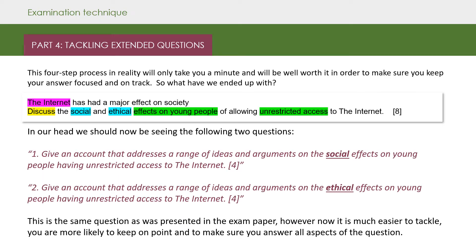This has now become two slightly less daunting four mark questions instead of one eight mark question. This four step process in reality will only take you about a minute and it's well worth it in order to make sure you keep your answer focused and on track. So in our head, we should now be seeing the following two questions: give an account that addresses a range of ideas and arguments on the social effects on young people having unrestricted access to the internet, and then the same question for four marks but on the ethical effects. It's now much easier to tackle — you're more likely to keep on point and to make sure you answer all aspects of the question without going off topic.